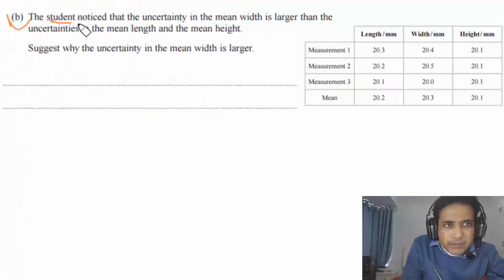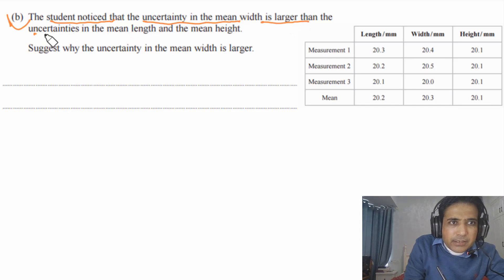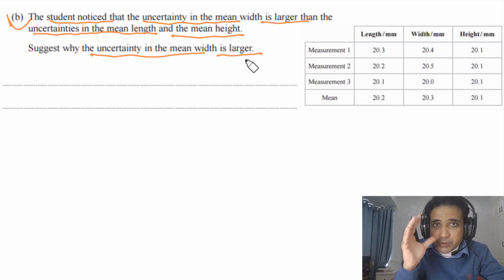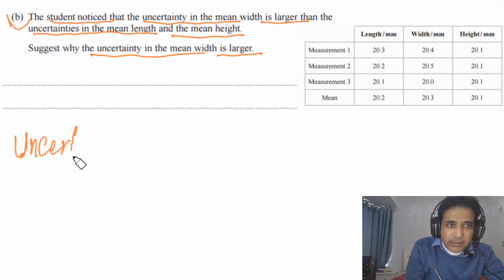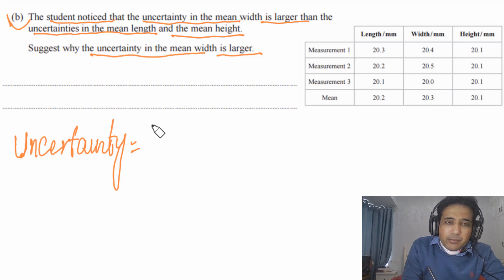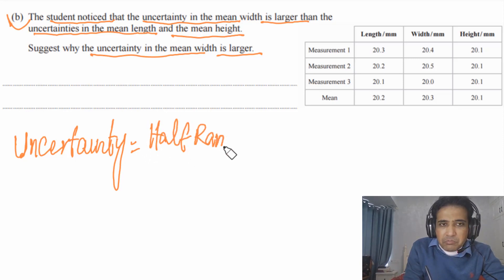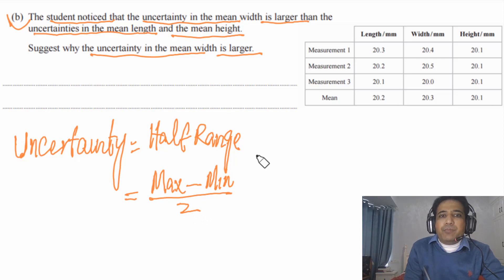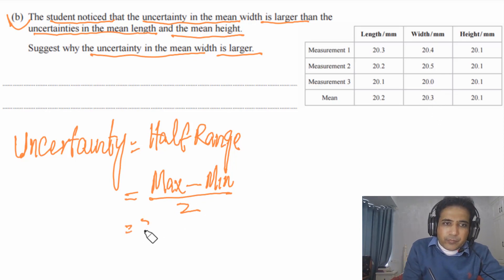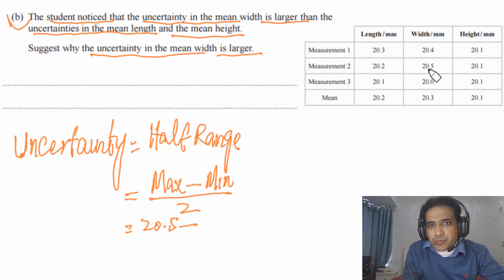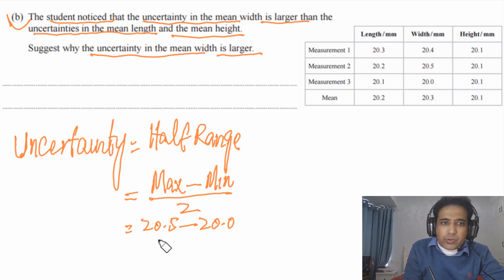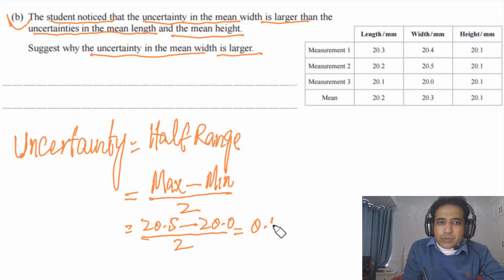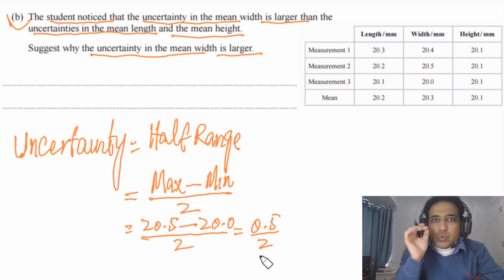Part (b) says the student noticed that the uncertainty in the mean width is larger than the uncertainties in the mean length and mean height — suggest why. First, we calculate uncertainty using the half range method: uncertainty equals (maximum reading − minimum reading) ÷ 2. For the width data, the maximum is 20.5 and the minimum is 20.0, giving (20.5 − 20.0) ÷ 2 = 0.25.